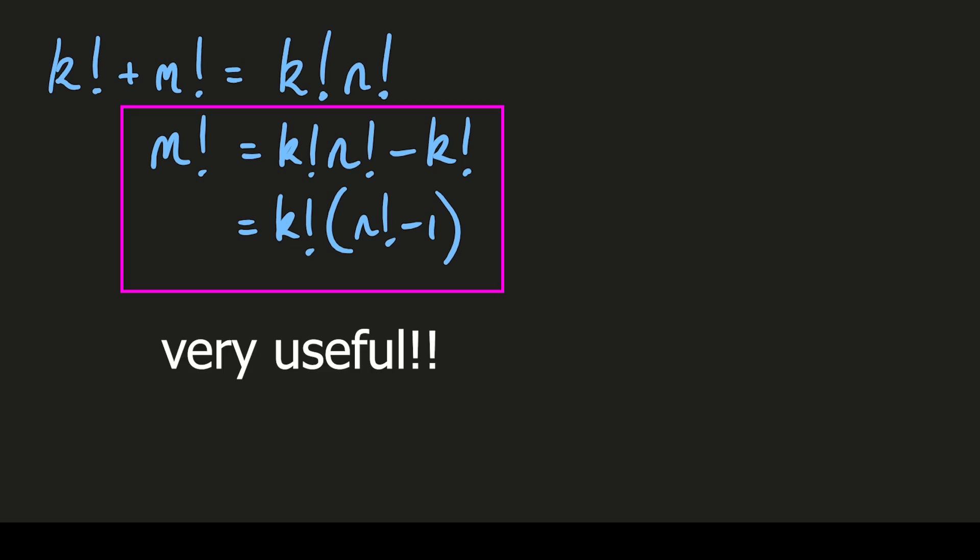On the right hand side we have a product of a factorial and another factorial minus 1. The key is that all factorials are even. So when we subtract 1 it must be odd.